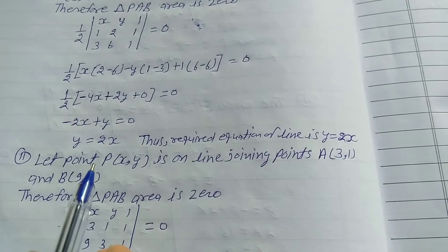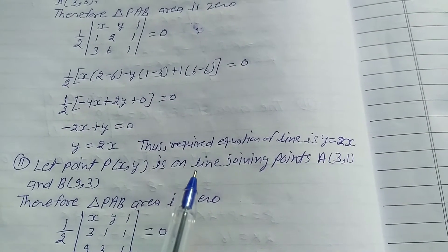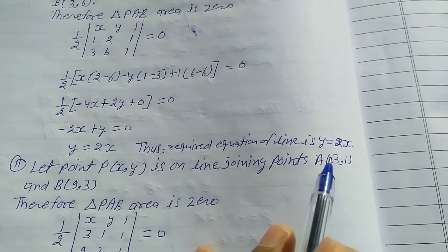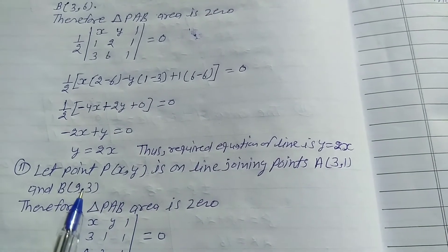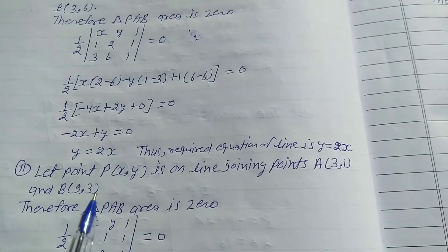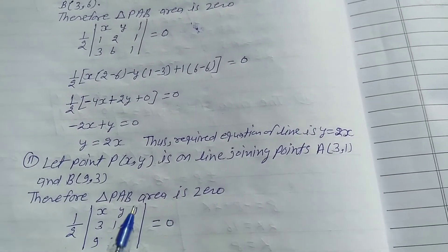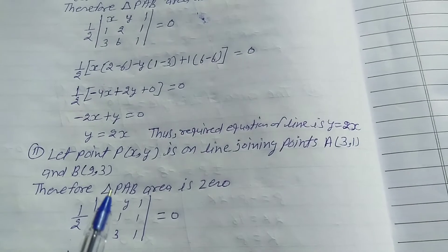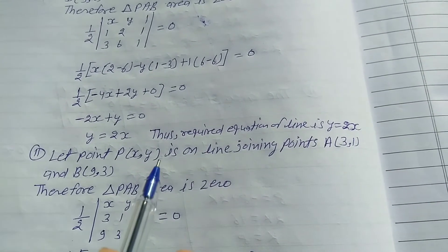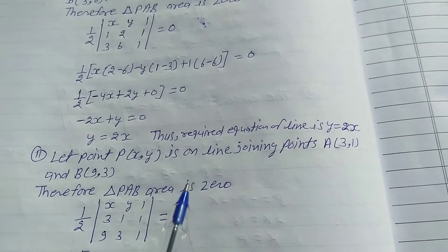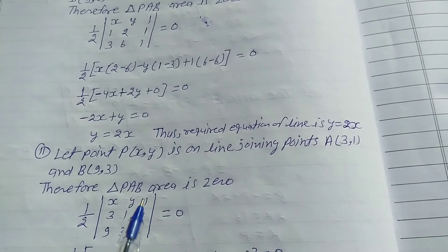Second: let point P be on the line joining point A bracket (3,1) and B bracket (9,3). These 2 points are given in the question. Therefore, triangle PAB area is 0, meaning these 3 points lie on one line.